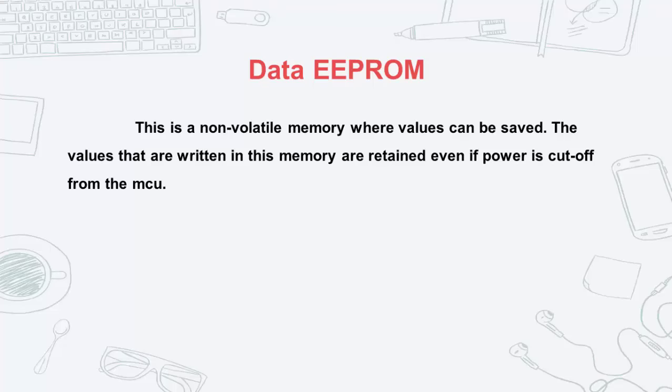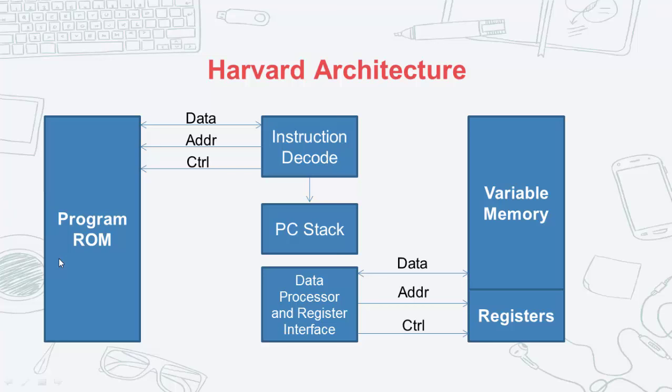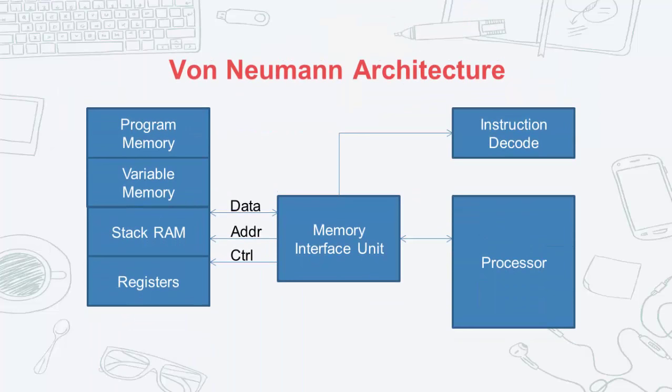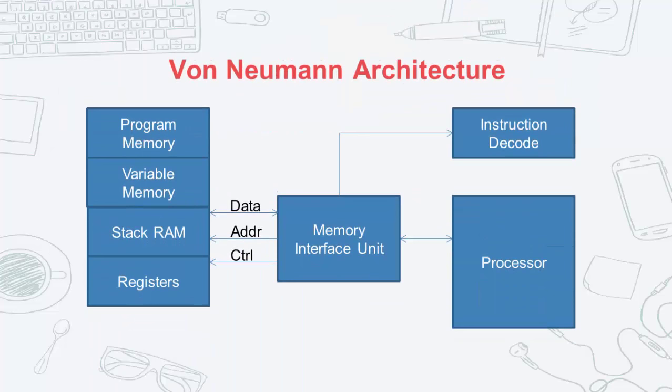The PIC implements the Harvard architecture. The program memory and the data memory have separate data buses, which means that in one clock cycle it can retrieve both program and data simultaneously. Unlike the von Neumann architecture, which only has a single data bus and would need two clock cycles to retrieve the instructions and the data. I don't want to dive into more details about the differences between the two architectures, because that discussion deserves a video of its own.